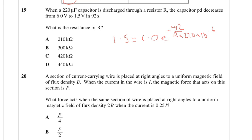We've got 1.5 equals 6.0 e to the minus 92 over R times 220 times 10 to the minus 6. So we want to do all that in reverse. 1.5 divided by 6, natural log that answer. That's equal to minus 92 over R. So minus 92 divided by my answer, then divide that by 220 times 10 to the minus 6. And what we end up with is 300,000, so 300 kilo-ohms.